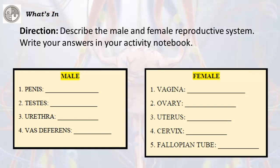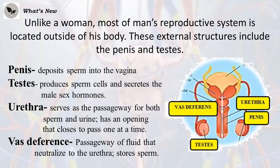Male reproductive parts: 1. Penis, 2. Testes, 3. Urethra, 4. Vas deferens. Unlike a woman, most of a man's reproductive system is located outside of his body. These external structures include the penis and testes. Penis: deposits sperm into the vagina. Testes: produces sperm cells and secretes the male sex hormones.